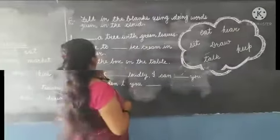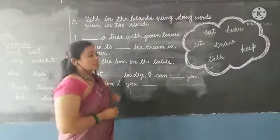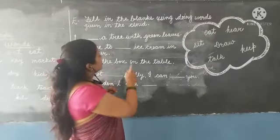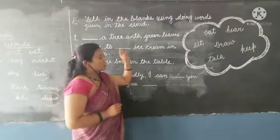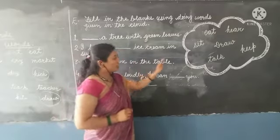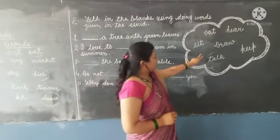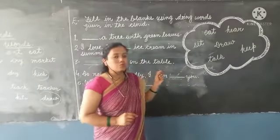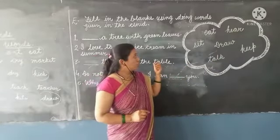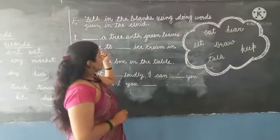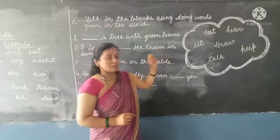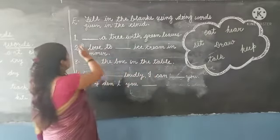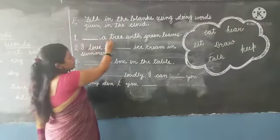Let's do the next exercise. Exercise E: fill in the blanks using doing words given in the cloud. You can see there is a cloud and in this cloud we have some doing words. We will write the correct doing word from this cloud. Let's start.